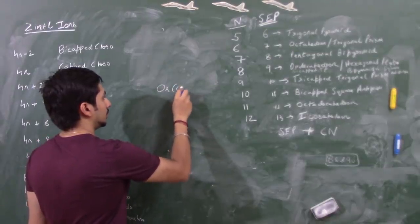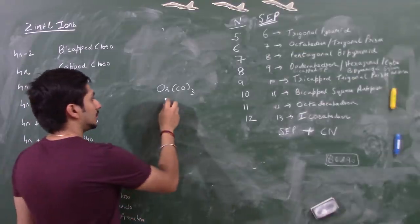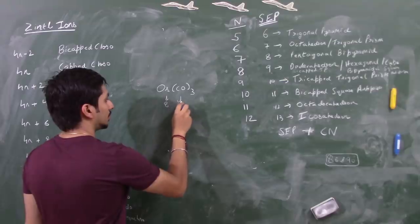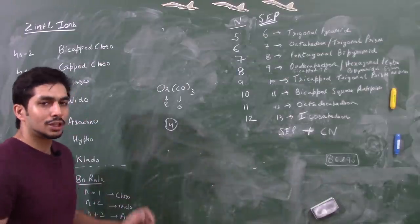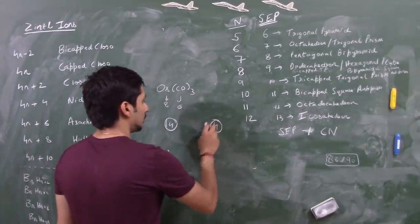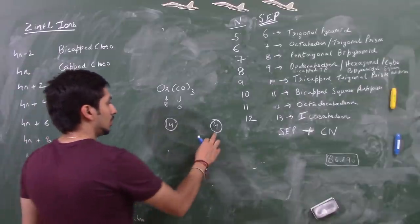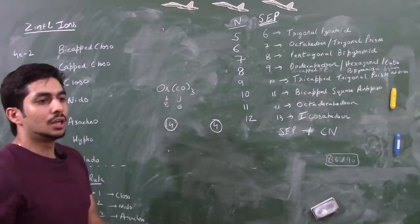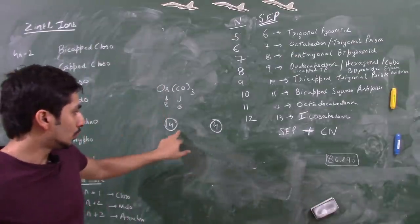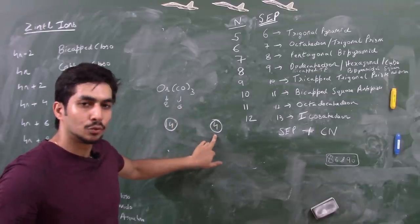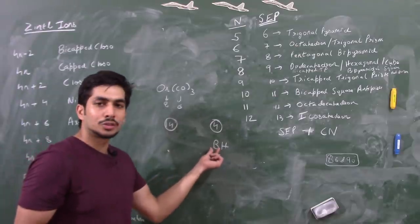Osmium contributes 8 electrons and three COs contribute 6 electrons, so the total comes out to be 14. All you have to do is subtract 10 from whatever value you get from the cluster. 14 − 10 = 4. Now equate this to a main group element - always try to equate it to boron. So 14 − 10 = 4 corresponds to a BH fragment, because boron contributes 3 valence electrons and hydrogen contributes 1, giving 4. Carbon also has 4 valence electrons, so 4 corresponds to either BH or C.